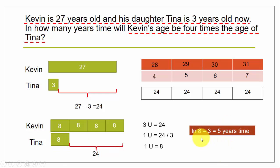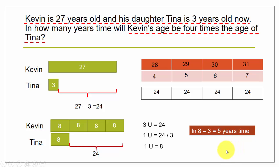In how many years' time will Tina become 8 years old? That's 8 minus 3, which equals 5. So in 5 years' time, Kevin will be four times as old as Tina. Hope this is clear — if you have any questions, please post in the comments section. Hope you enjoyed it, have a good day, thank you, bye bye.